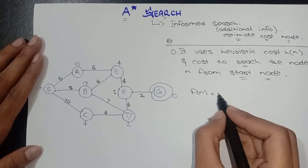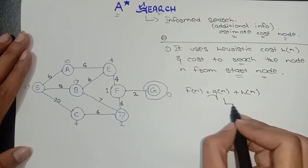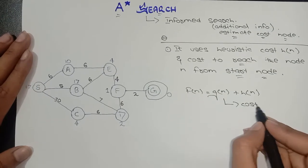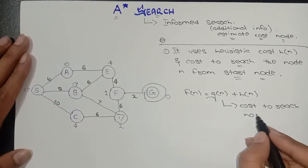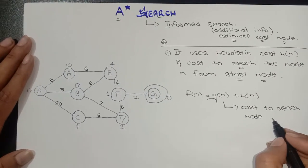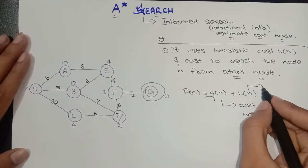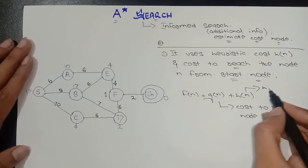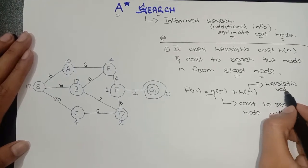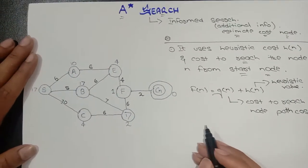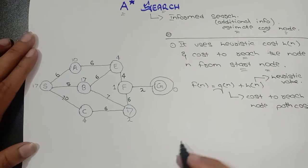Here is the A* search formula, which is: f of n equals g of n plus h of n. What is g of n? G of n is our cost to reach the node from the start node — the path cost. And what is h of n? H of n is our heuristic cost value of each node.